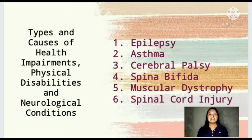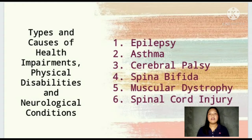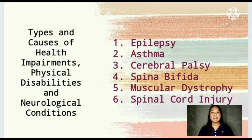Types and Causes of Health Impairments, Physical Disabilities, and Neurological Conditions. According to Heward, the common types of health impairments, physical disabilities, and neurological conditions are epilepsy, asthma, cerebral palsy, spina bifida, muscular dystrophy, and spinal cord injury.